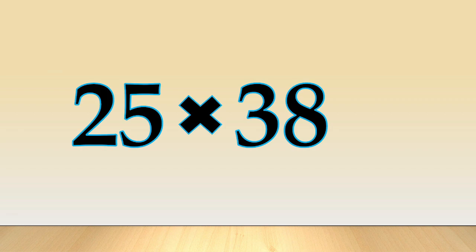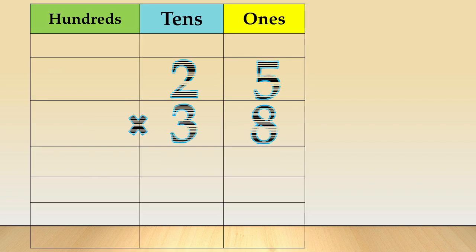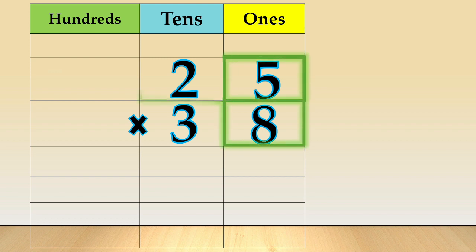Another example: 25 times 38. First, arrange the numbers in columns like this. Place the digit of the number in a column based on its place value. Next, we multiply by the ones place. We are going to multiply 25 times 8 — just ignore the 3.